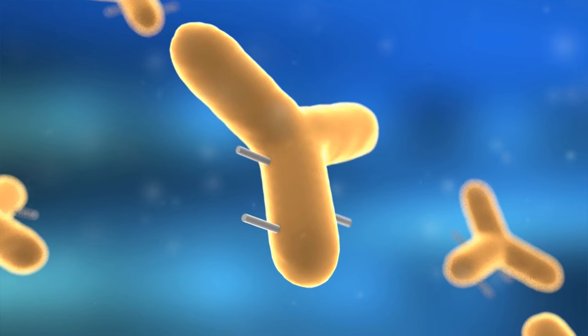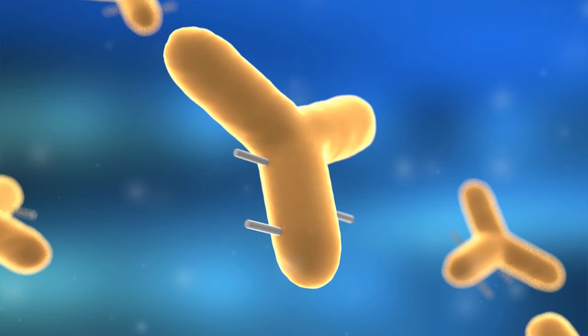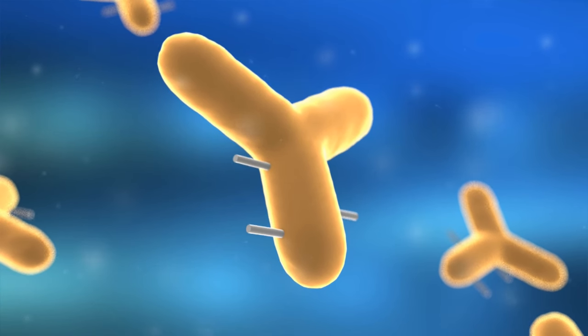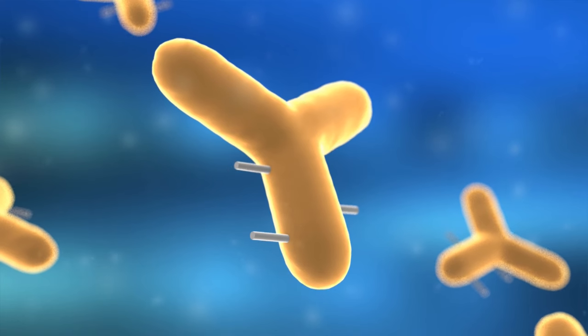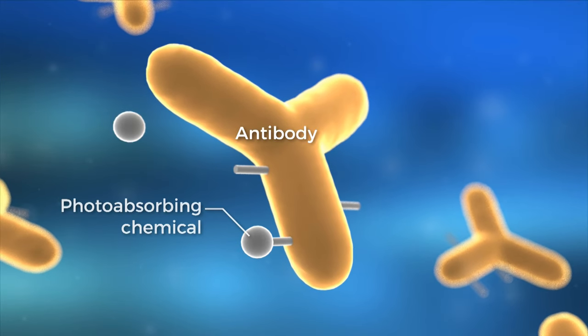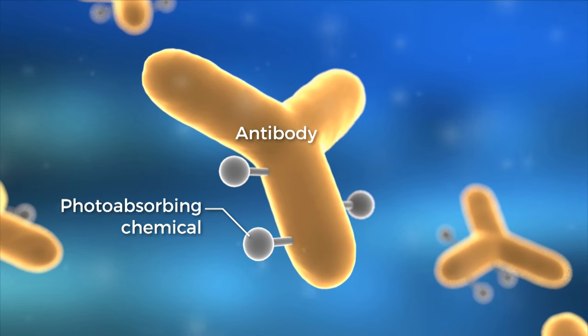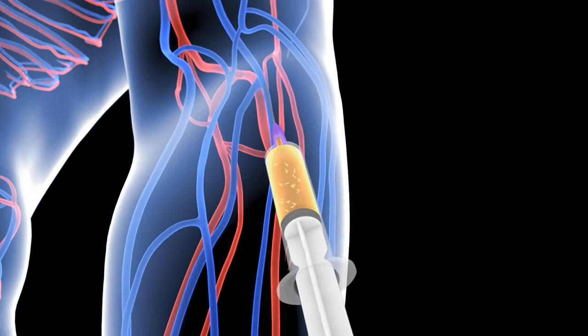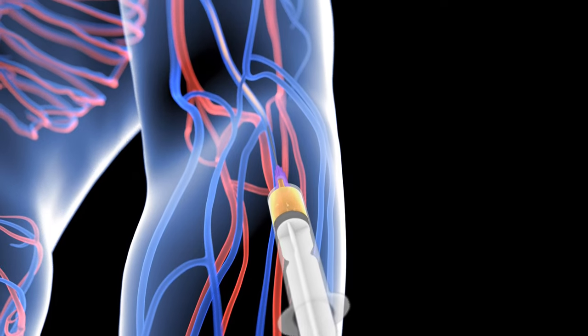Photoimmunotherapy is a new form of cancer therapy involving near-infrared light. Photoimmunotherapy uses an antibody to which a photoabsorbing chemical is attached. The antibody-photoabsorber conjugate is injected into a patient.